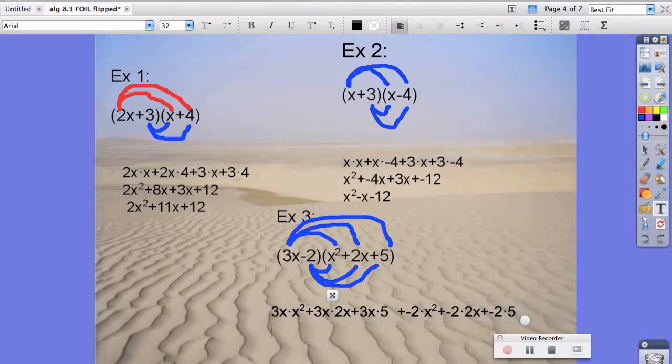Again, simplifying, we get 3x to the third power, plus 6x squared, plus 15x, minus 2x squared, minus 4x, minus 10.